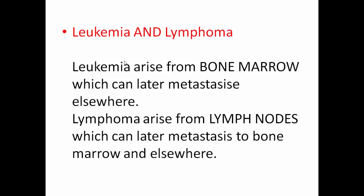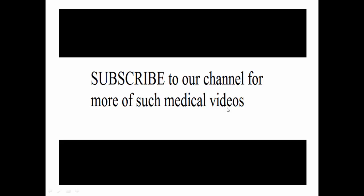Leukemia and lymphoma are differentiated by their site of origin. Leukemias arise from the bone marrow and can later metastasize elsewhere including lymph nodes. Lymphomas arise from the lymph nodes and can later metastasize to the bone marrow and elsewhere. The site of origin is the fundamental difference: leukemia originates in bone marrow, lymphoma originates in lymph nodes.